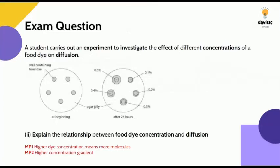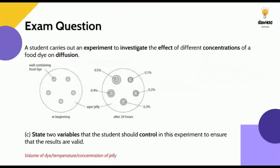As there's a higher dye concentration, that means there are more molecules in the same space, and because of that the concentration gradient will increase — we're going from low to high concentration, so the difference is much bigger. Lastly, we need to state two variables that students should control to make the experiment valid. These would be either the volume of dye, temperature, or the concentration of the agar jelly.